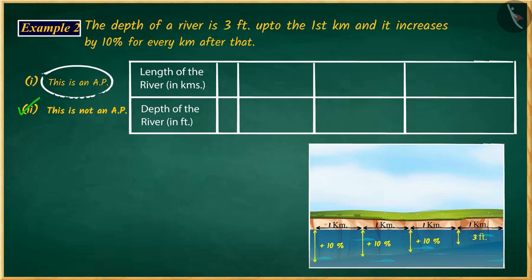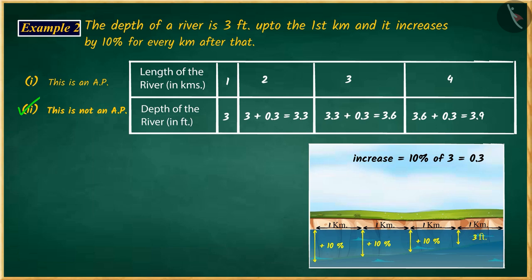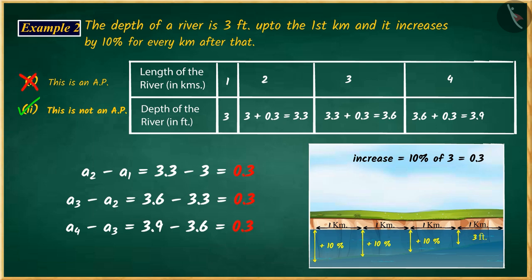If you have chosen the first option, then it's a good try, but this is an incorrect answer, because you have considered a 10% increase in the depth for every kilometer in the question as a fixed number. You remember that the series you get by adding a certain number to each term except the first term is an arithmetic series. Due to which, you considered 10% as a fixed number and the series obtained according to the situation given in the question as an arithmetic series, and your answer went wrong.